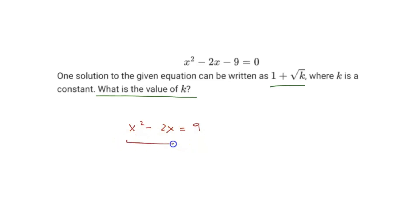And then we can complete the square on this side, so we can have x squared minus 2x. Our b value is negative 2, so half of our b value squared would be positive 1. And that should be equal to 9. And because you added a positive 1 to the left side, we have to add it to the right side. And this right here just becomes x minus 1 squared equals 10.